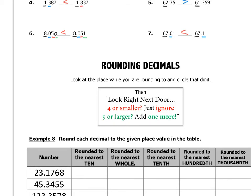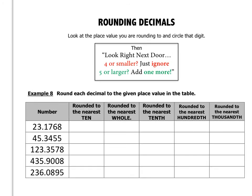Let's apply this to the chart. For 23.1768 rounded to the nearest tens place, I circle the 2 in the tens place. This will round to either 20 or 30. The digit to the right is 3, which is in the 4-or-smaller category, so I just ignore — this rounds to 20. For 435.9008 rounded to the nearest tens, I circle the 3. The digit to the right is 5, which means 5-or-larger, add one more — so this rounds to 440.